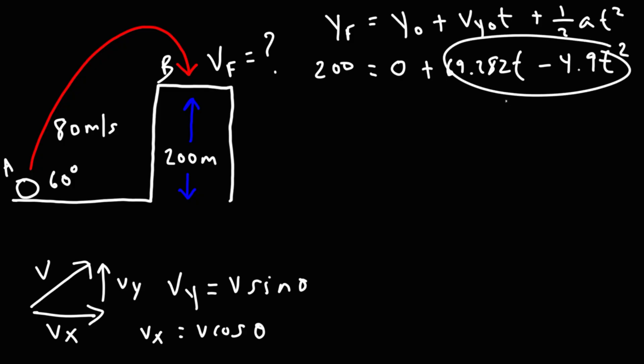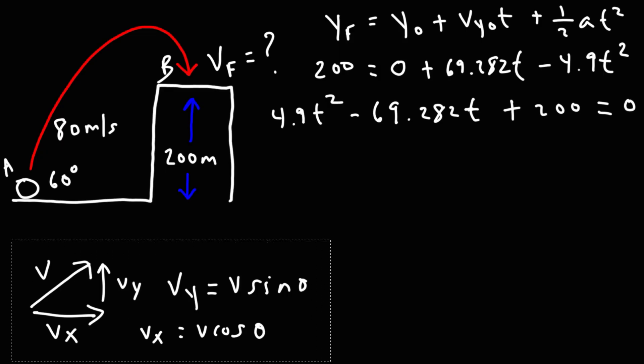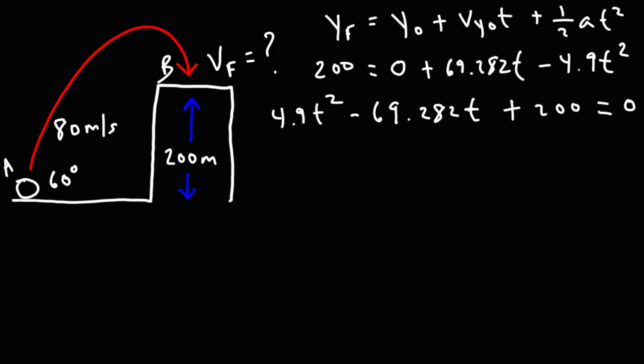Now I'm going to take everything from the right side and move it to the left side. So negative 4.9 t squared is going to become positive 4.9 t squared, and this term will be negative on the left side, so it's negative 69.282t. The 200 is going to stay on the left side, so that's going to remain as positive 200, and this is going to equal 0. So right now we have a quadratic equation in standard form. So we're going to use that to get the value of t. So t is going to be equal to negative b plus or minus the square root of b squared minus 4ac divided by 2a.